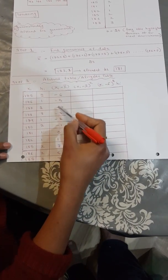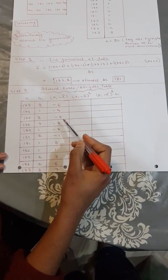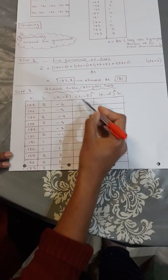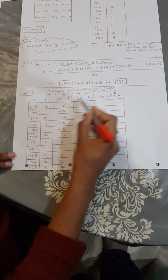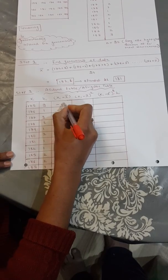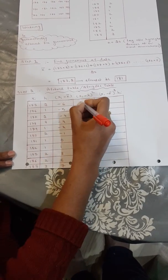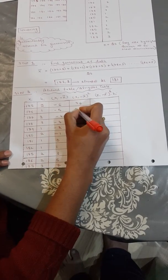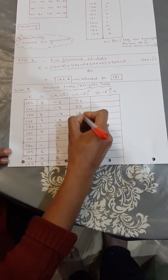But the problem is that we have many minus values. And so therefore, the mathematicians have said that we have only one way to handle the negative values here. So we have to square them. So we can eliminate the minus. So if we square these, then minus 6 times minus 6 is 36.